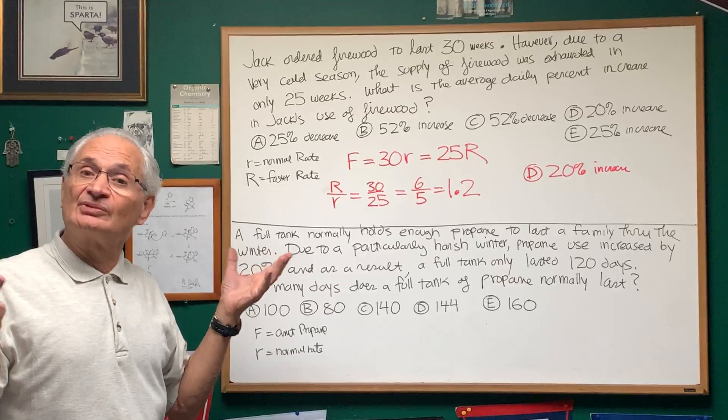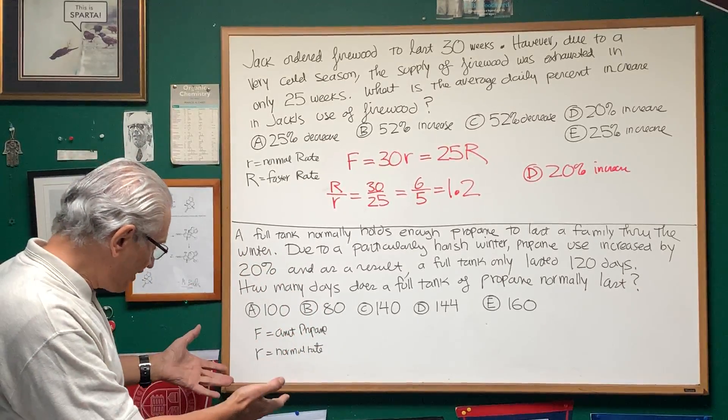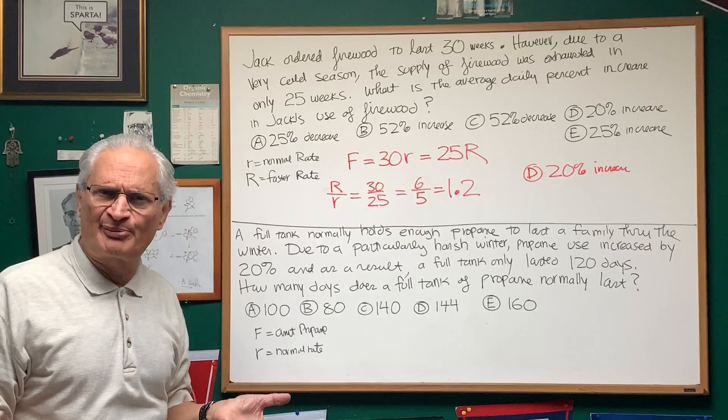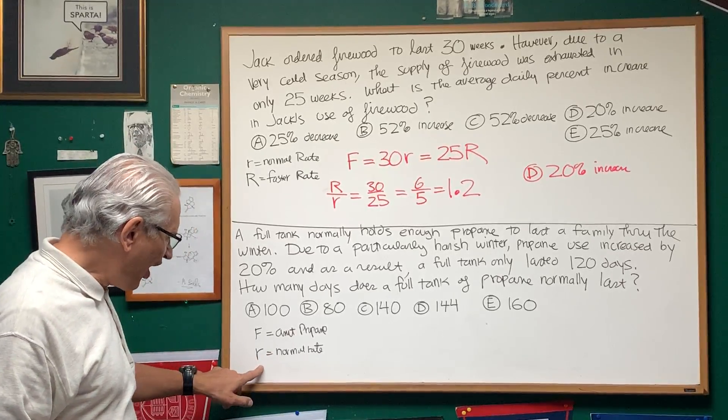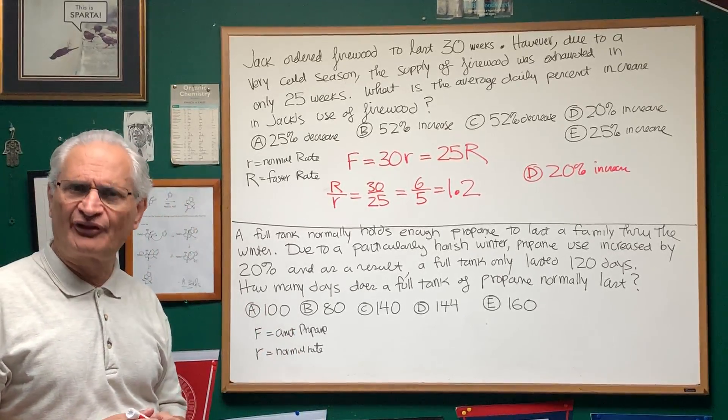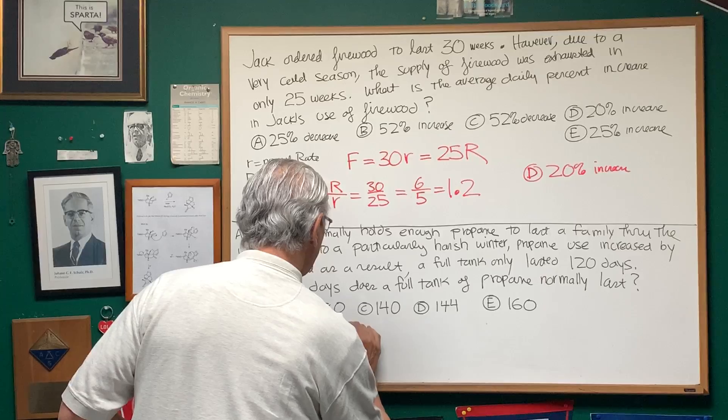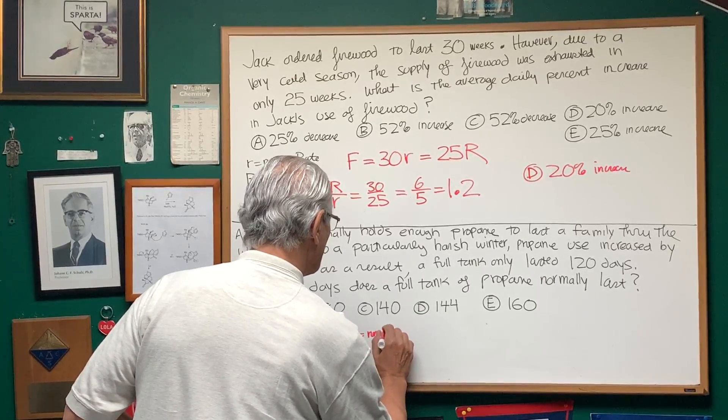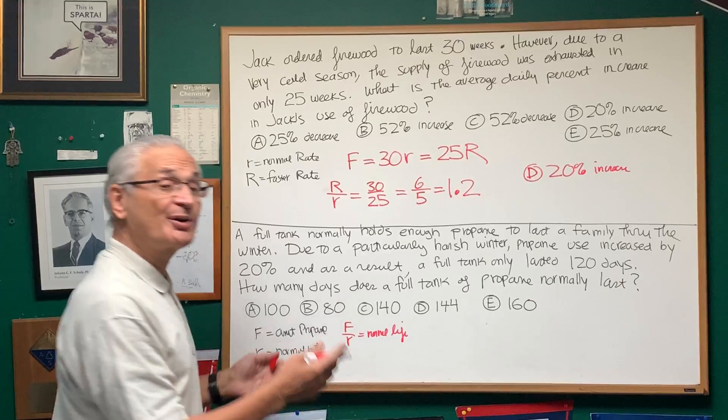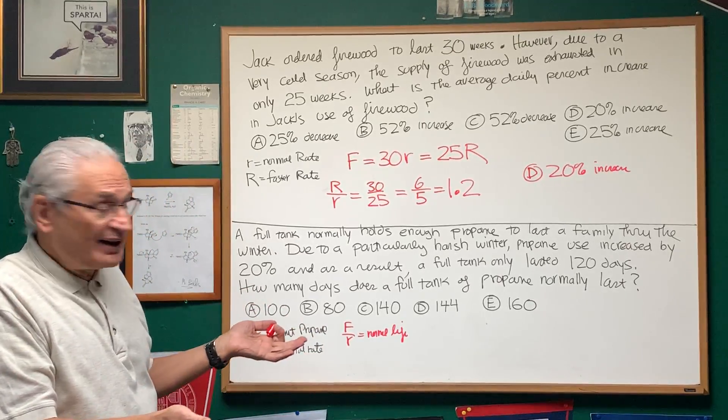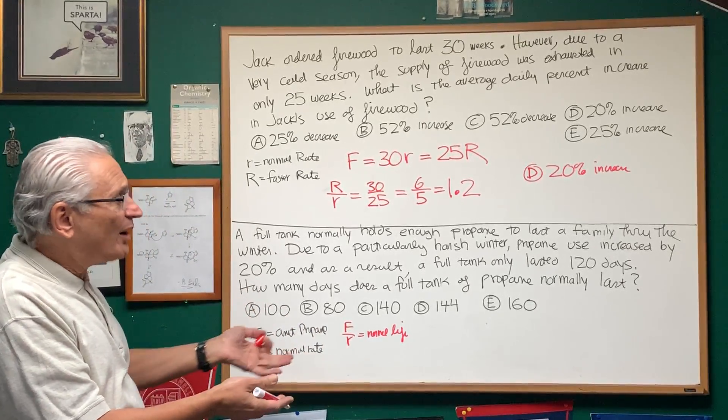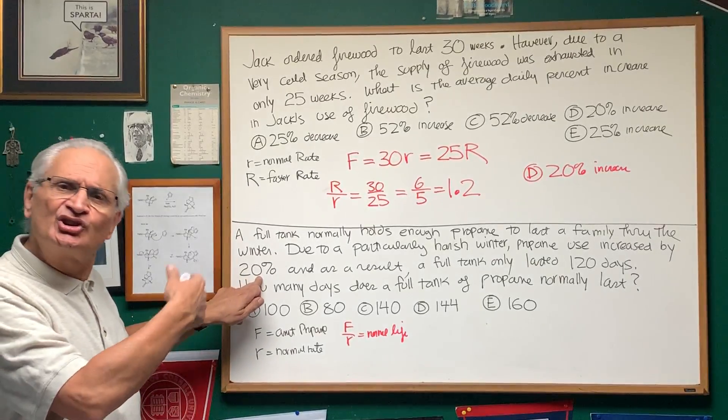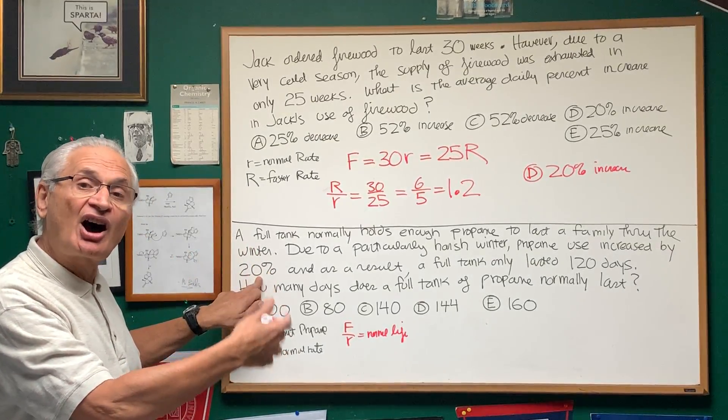Okay, so in order to organize this problem, we're going to assign two variables. Capital F, let's assign to the total amount of propane that we have, and r, the normal rate of propane use. So F over r is going to be the normal life of the propane. We don't know that, right? We only know how long the propane is going to last during this very harsh winter in which the usage is 20% higher than normal.